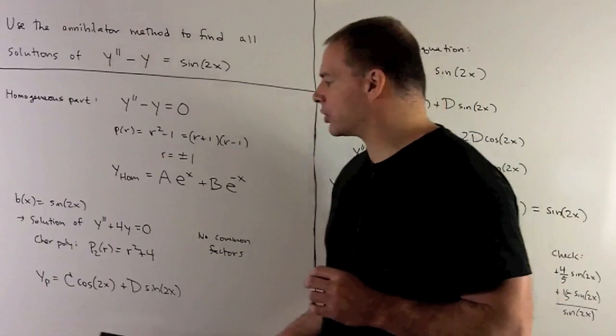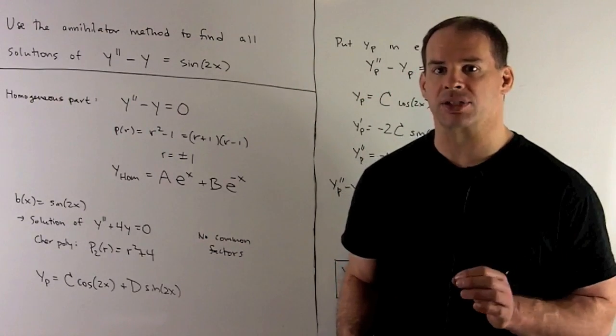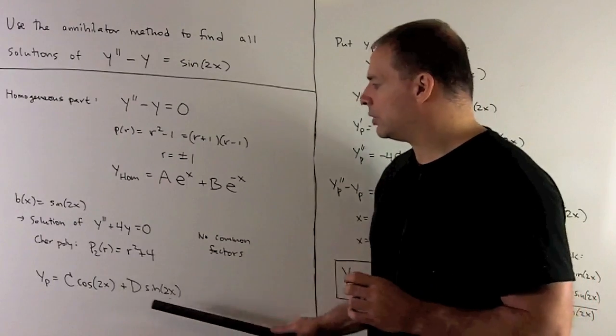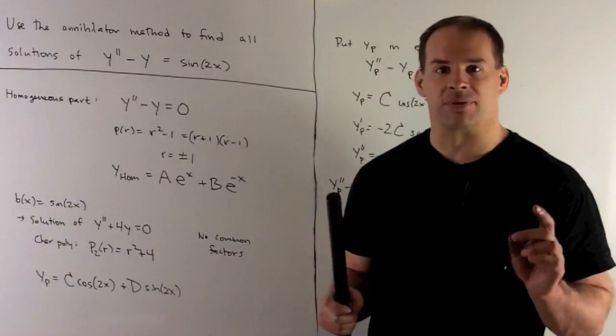That means our particular solution is going to be the form c cosine 2x plus d sine of 2x. Take our yp, we put in the original equation, solve for c and d.